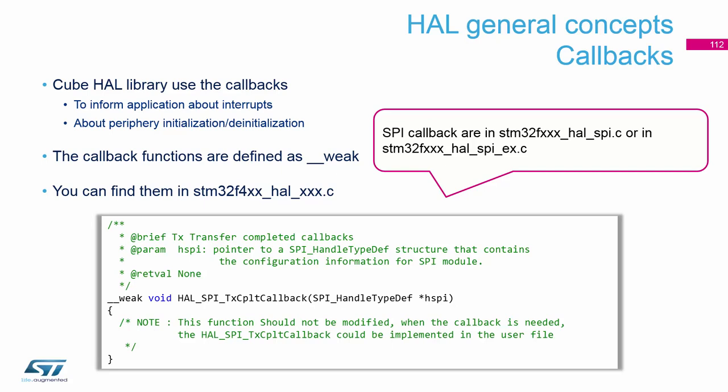The important part is how to find the callbacks. The callbacks are defined as weak functions. Here on this slide you can see there is the callback for the SPI transmit complete - it's defined as weak. The definition of these callbacks is usually in the HAL driver file related to the peripheral, for example `stm32f4xx_hal_spi.c`. There you will find the weak definition. If you want to use your own callback, you simply copy the function name with its parameters - from void to the end, without the weak keyword - and use this function inside your project.